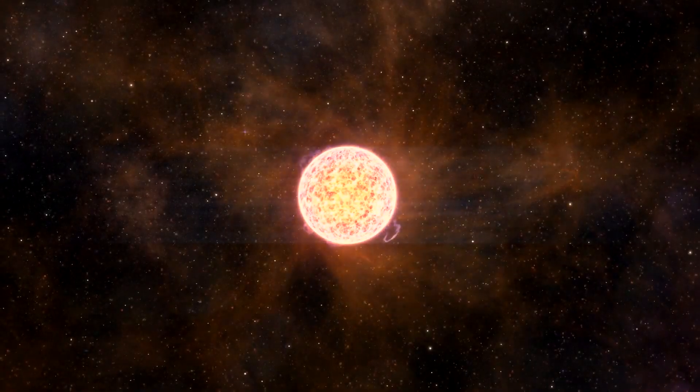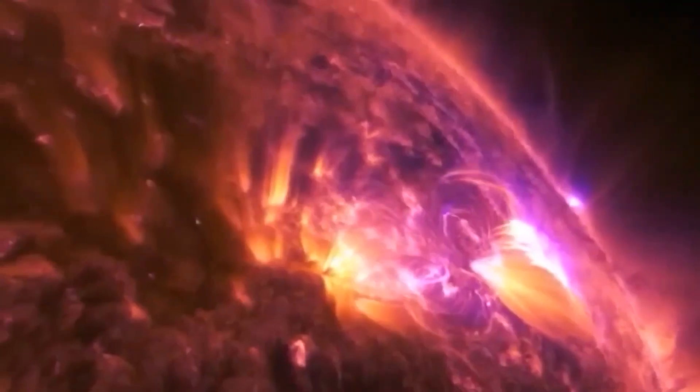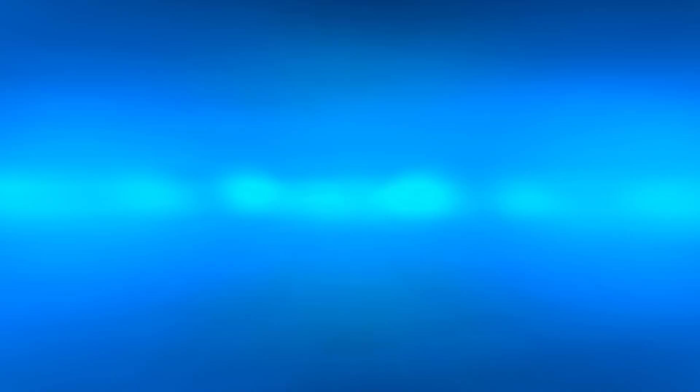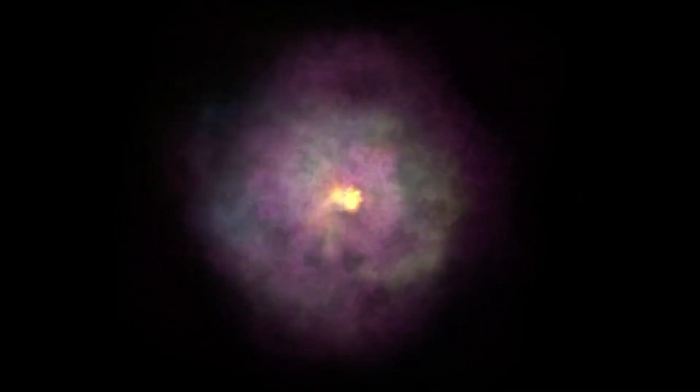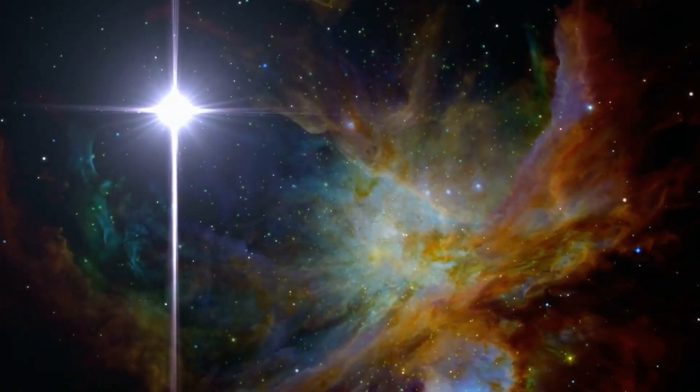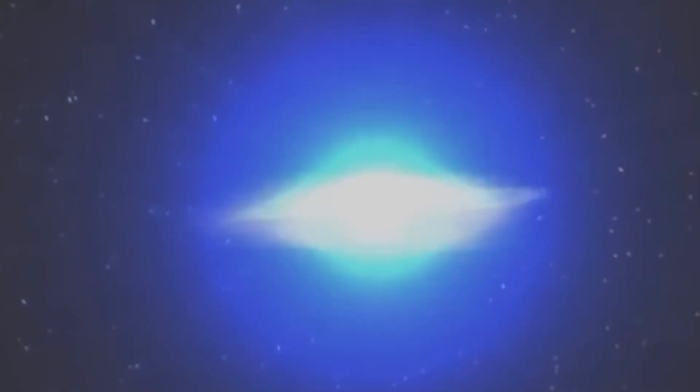Stars undergo an extensive journey through different stages in their evolutionary cycle. When new, these stars have relatively low temperatures and brightness. Subsequently, they advance to the main sequence phase, marked by nuclear fusion, where they remain stable for billions of years. Finally, as their hydrogen fuel is depleted, they enter the red giant phase, where they experience a rapid increase in temperature and brightness.